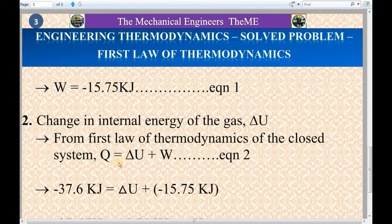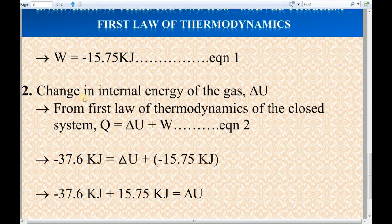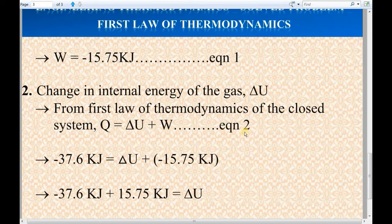Next, we will find the value of change in internal energy of the gas, taken as delta U. For finding the value of change in internal energy, we will use the formula of the first law of thermodynamics for a closed system. The formula is Q equals delta U plus W. Consider this as equation 2. In this formula, we know the value of Q and W from equation 1, so just substitute the values.